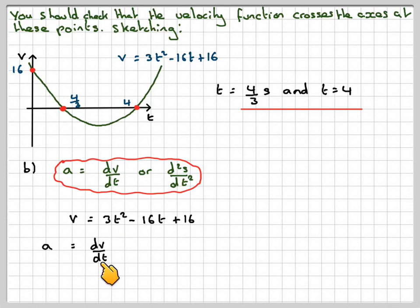We want to know where it's equal to 2. So when a is equal to 2 meters per second squared, we'll put 6t minus 16 is equal to 2. 6t is equal to 18. Therefore, t will be equal to 3 seconds.